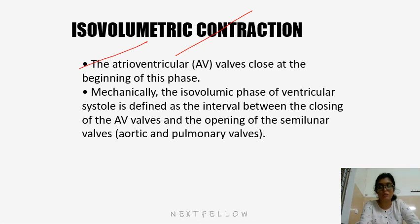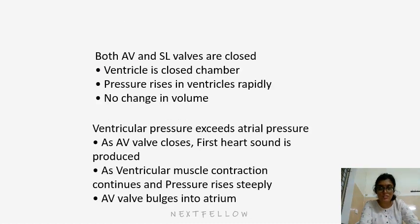In isovolumetric contraction, the AV valve is already closed at the beginning of this phase. The isovolumetric phase of ventricular systole is defined as the interval between the closing of the AV valves and the opening of the semilunar valves. Contraction is happening, but the semilunar valves are not yet open, and the AV valves have closed, so the volume of the ventricles remains the same — that is why it is called isovolumetric contraction. Both AV and semilunar valves are closed; the ventricle is a closed chamber. Pressure rises rapidly with no change in volume.